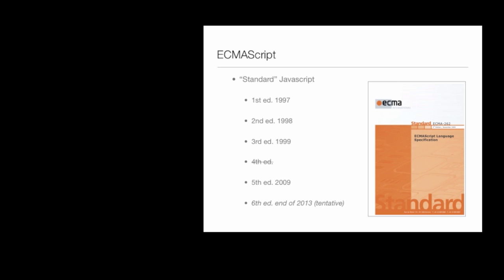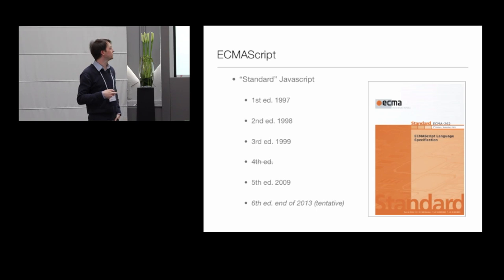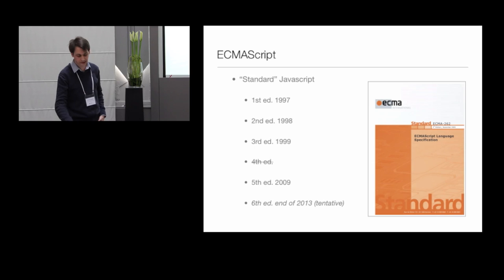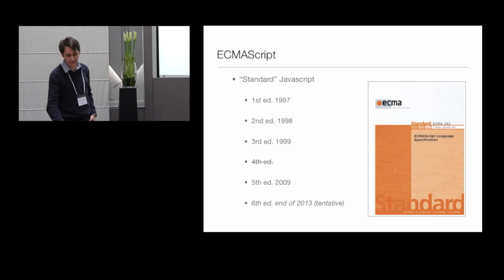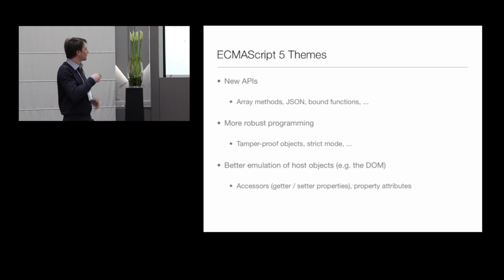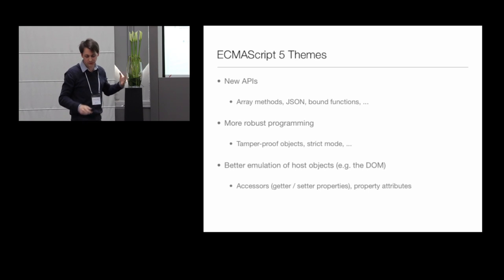Hopefully by the end of this year we'll have the sixth edition — work on that has already progressed quite far with a draft specification. ECMAScript 6 is going to be a fairly major update: classes and a module system will be introduced. But it'll take a few years before we can depend on that, so ECMAScript 5 is what we're stuck with today. ECMAScript 5 updates can be categorized into three themes: new APIs, support for more robust programming useful for security, and better emulation of host objects.